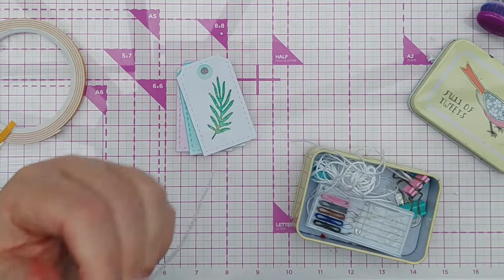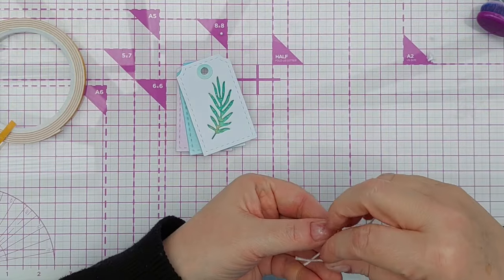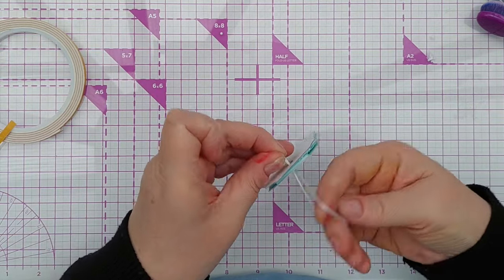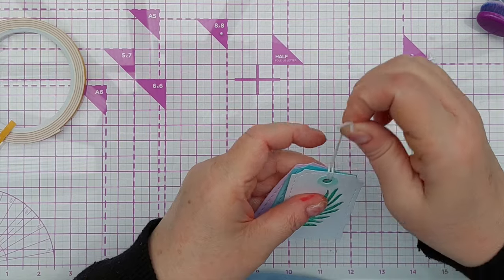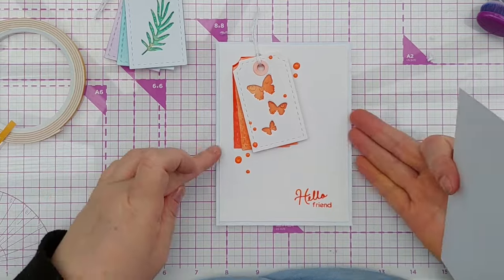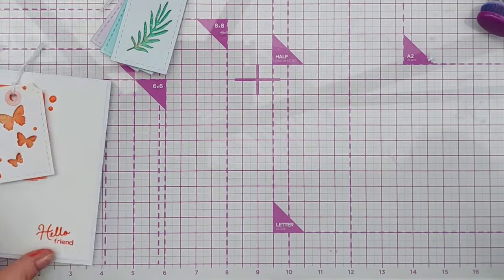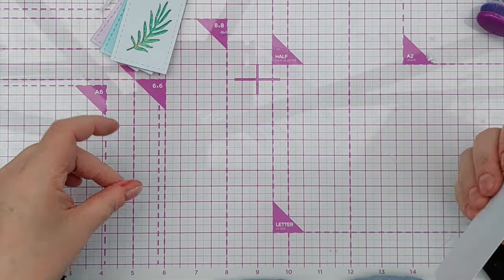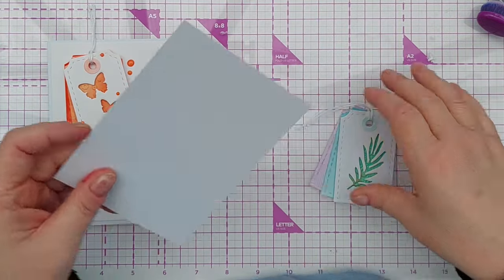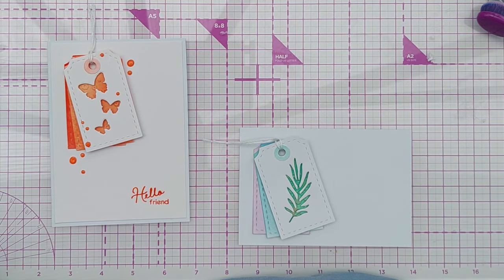I'm going to put some thread through the hole in my tag. This is just white embroidery thread, and this adds a little bit of texture and interest and holds them together. For this card I did a four and a quarter by six inch card, but this card's going to be roughly the same size in a landscape orientation.